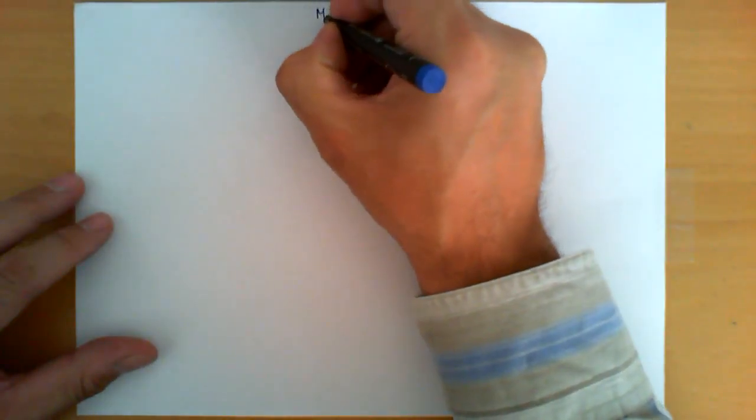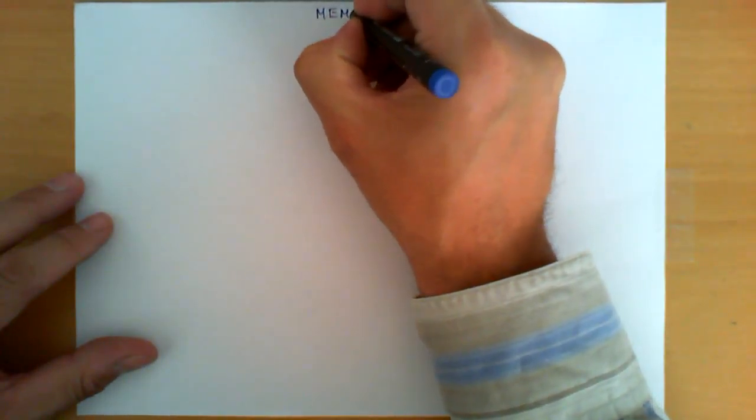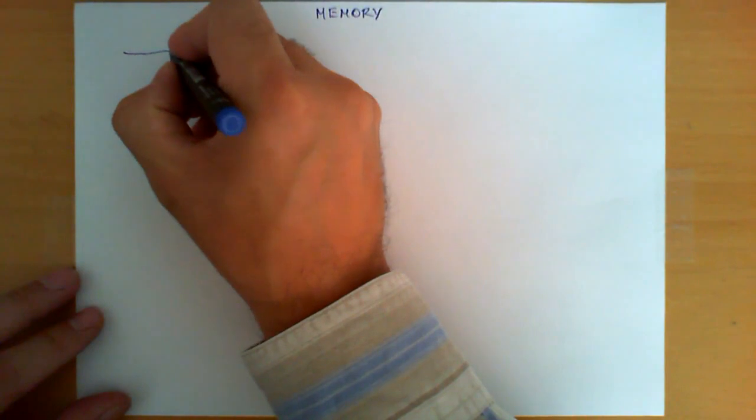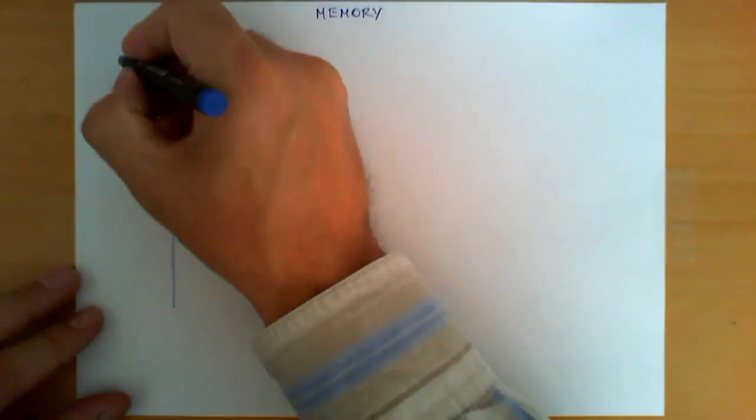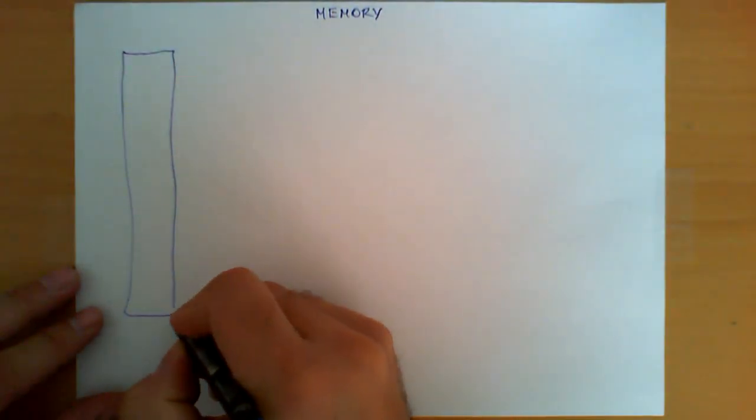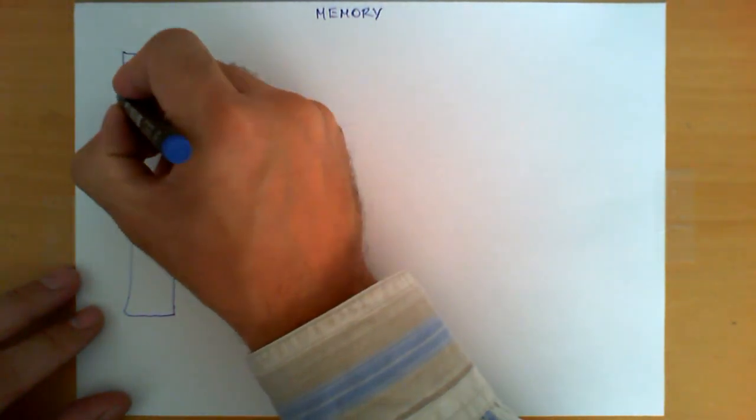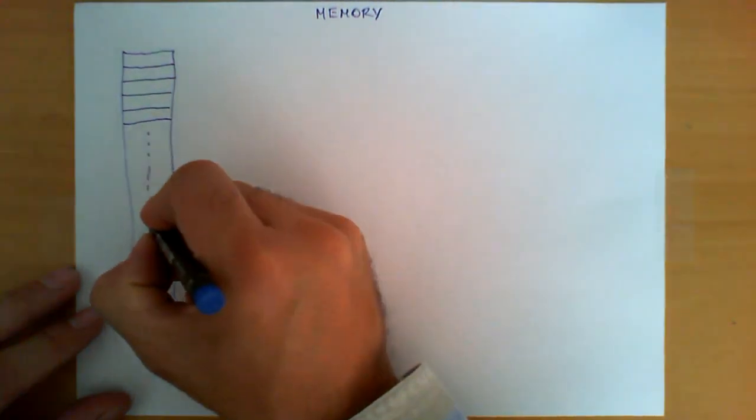In this video we're going to explain how memory works in a computer system. Basically, memory in a computer system can be seen as this huge table which is made out of what we call little cells like this one.